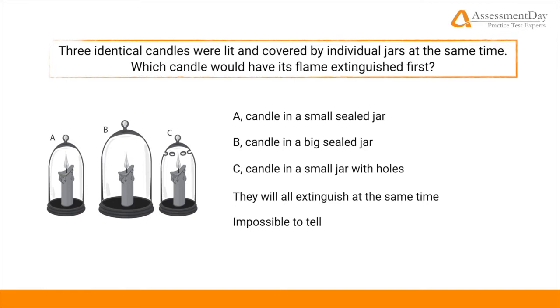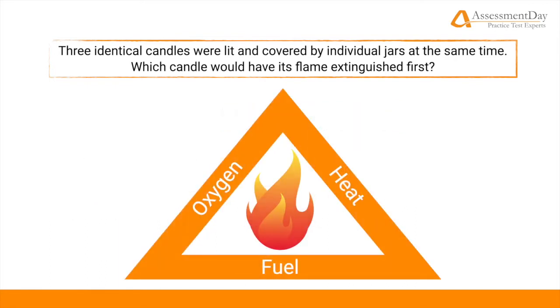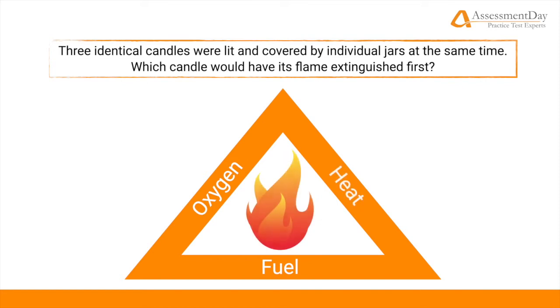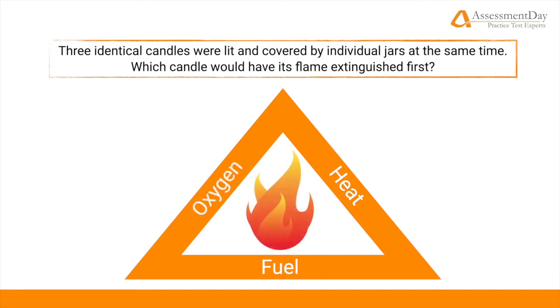If you said A, then you'd be correct. Let's explain why. Here we have what's called the fire triangle or combustion triangle. It shows that in order for a fire to live, we need three components. If one of them goes, the flame will die. Now we're going to loosely recreate this question with the candle and see what happens to the flame under different conditions.